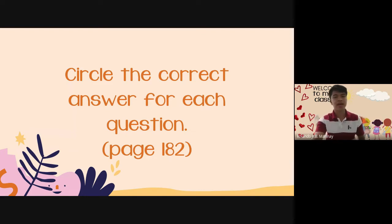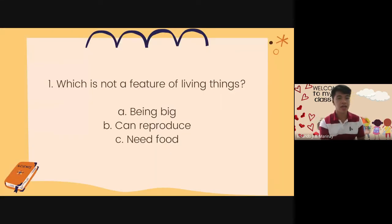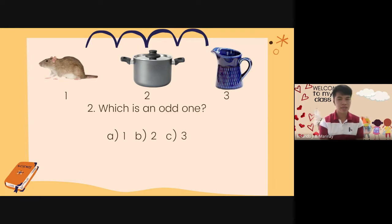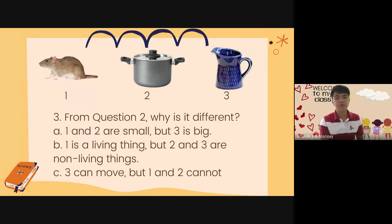All right, let's begin. Circle the correct answer for each question. Number one. Which is not a feature of living things? A. Being big. B. Can reproduce. C. Need food. Number two. Which is an odd one? A. 1 B. 2 C. 3